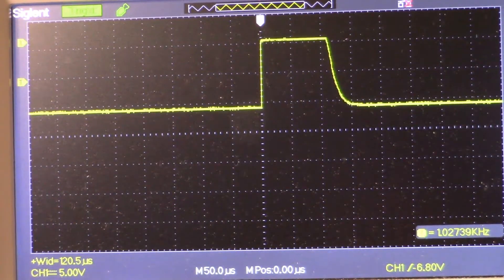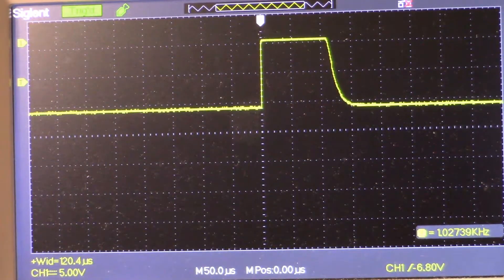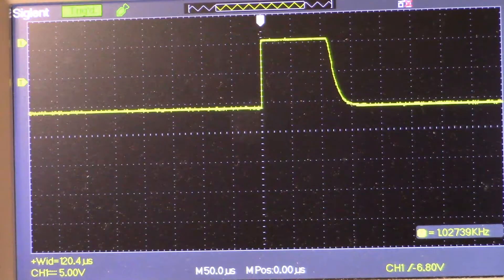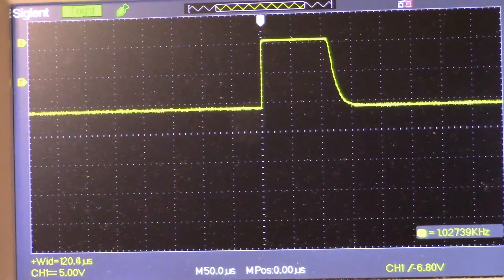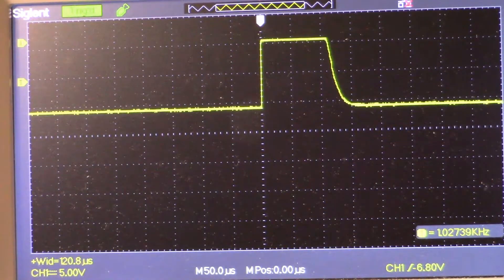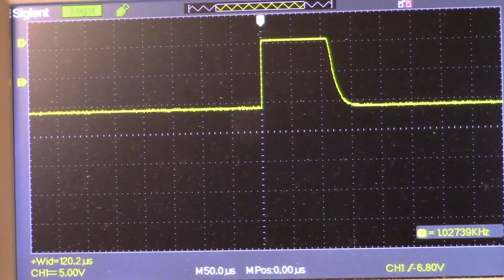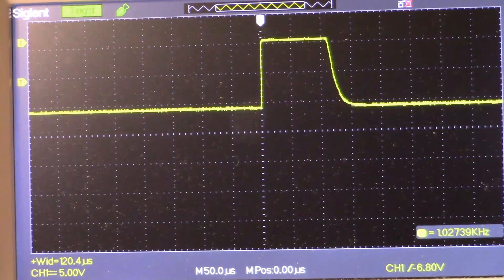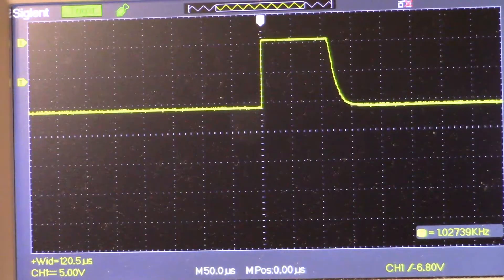If we were to want to adjust the frequency for instance, we have R44, it's a 100k multi-turn trimmer. And to adjust the pulse width, it's R43 and that's a 10k multi-turn trimmer.